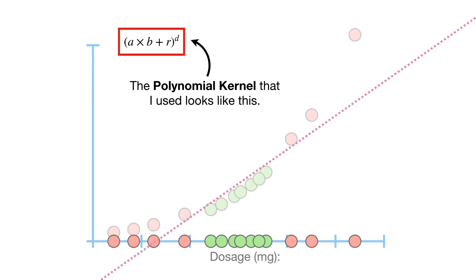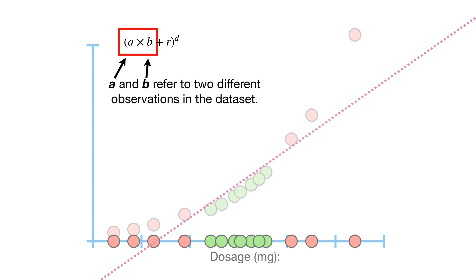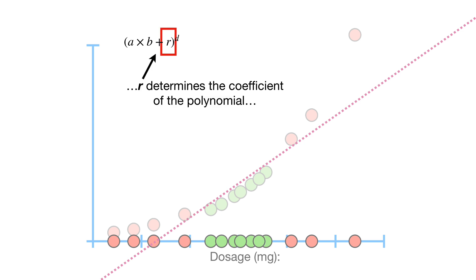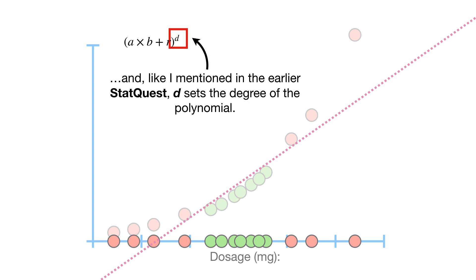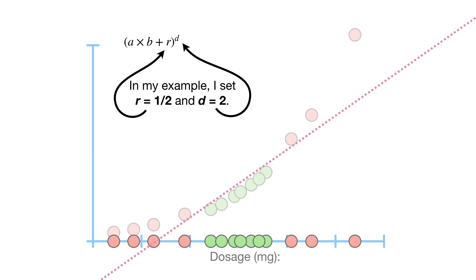The polynomial kernel that I used looks like this. A and B refer to two different observations in the dataset. R determines the coefficient of the polynomial, and like I mentioned in the earlier StatQuest, D sets the degree of the polynomial. In my example, I set R equals 1 half and D equals 2.